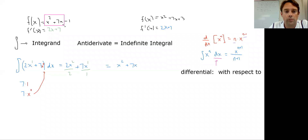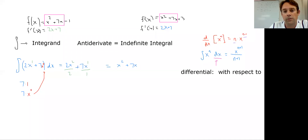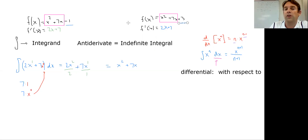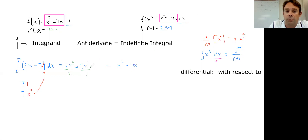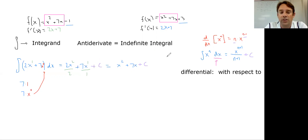x² + 7x is what we get, but notice each of those original functions also had some sort of constant after it. Which constant does this particular integral relate to? The reality is we don't know. Because of that, at the end we always add plus C — a constant number. In the first case it was −1, in the second it was +3. Since the derivative of any constant is zero, we write plus C to represent any possible constant number.